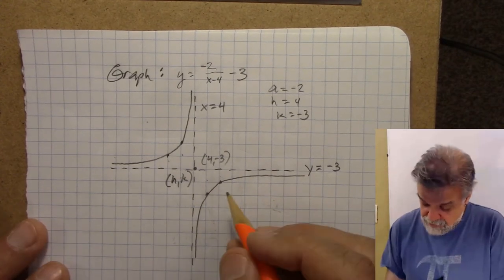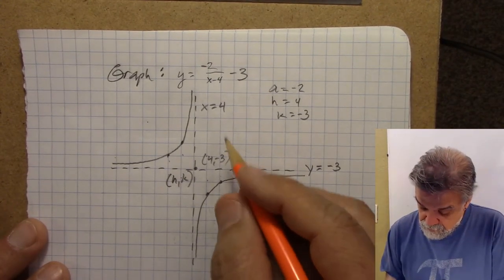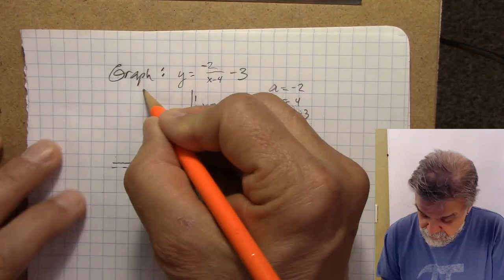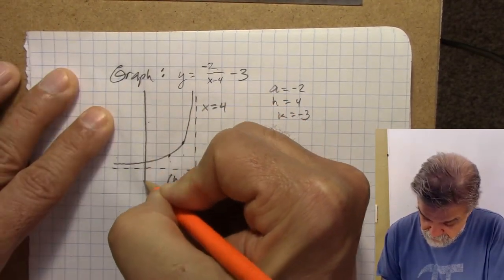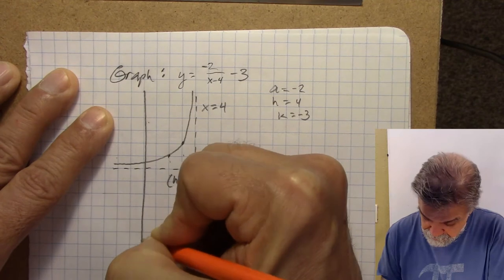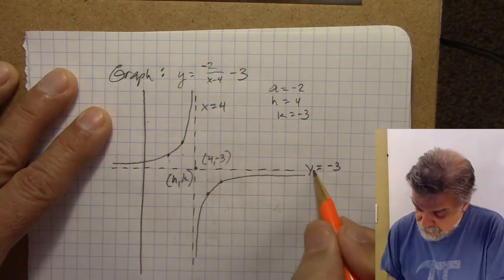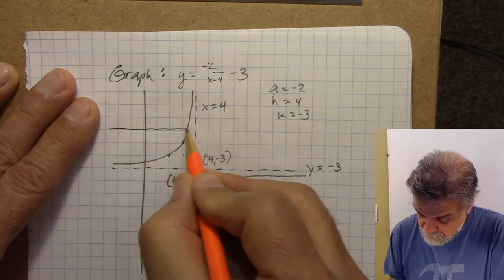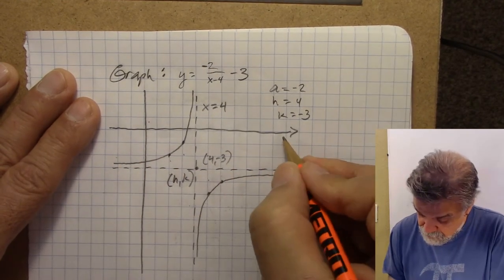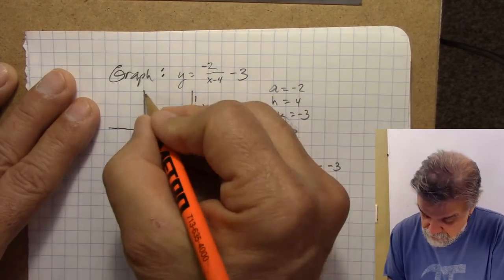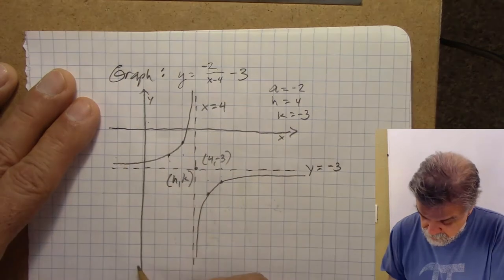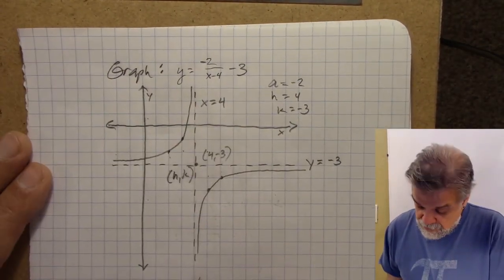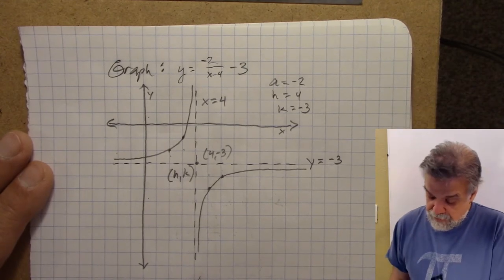With x = 4 as the vertical asymptote, my y-axis is 4 units over from it. With y = -3 as the horizontal asymptote, my x-axis is 3 units above it. So that's what my graph looks like — the function drawn around the intersection point (4, -3).